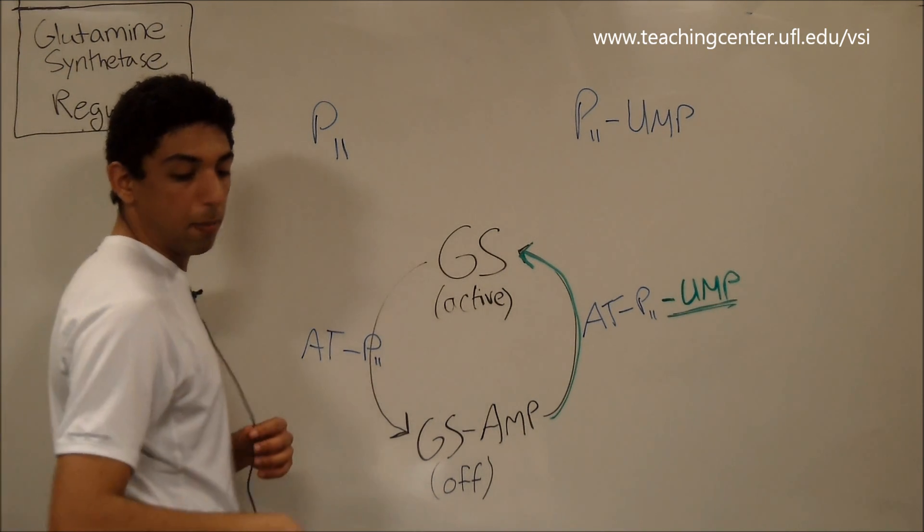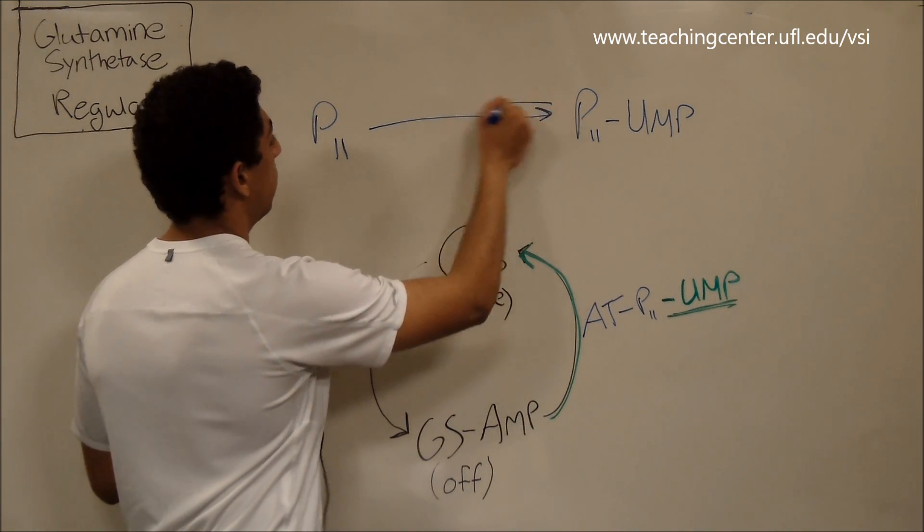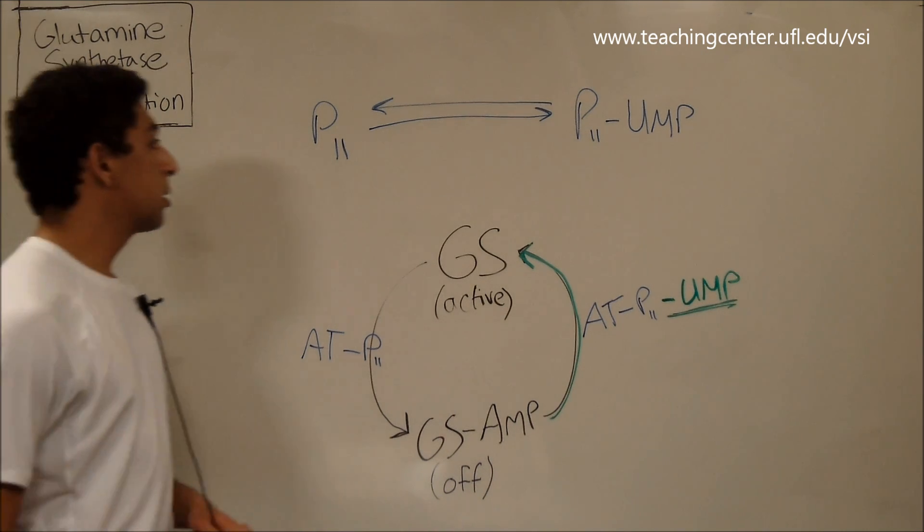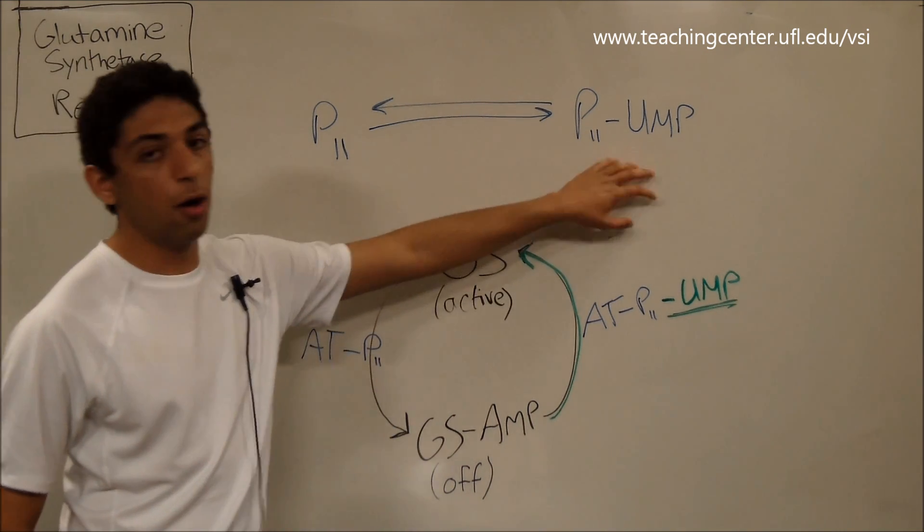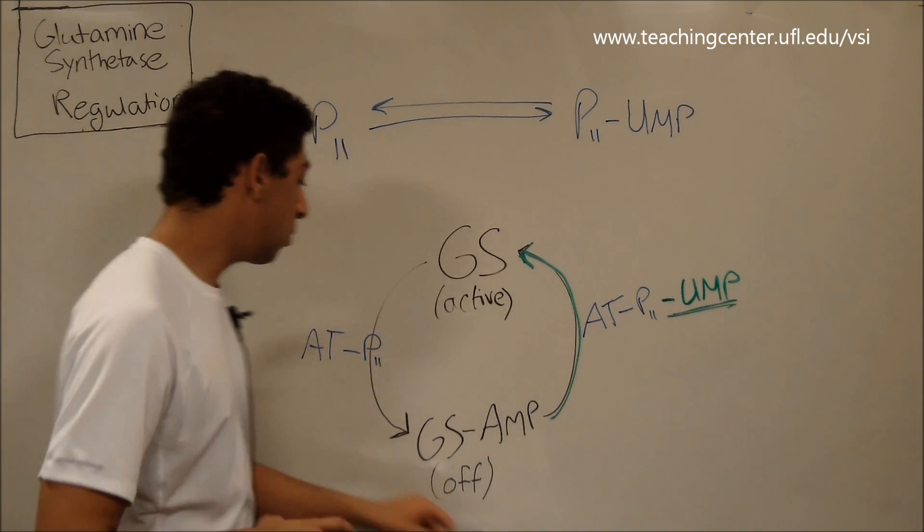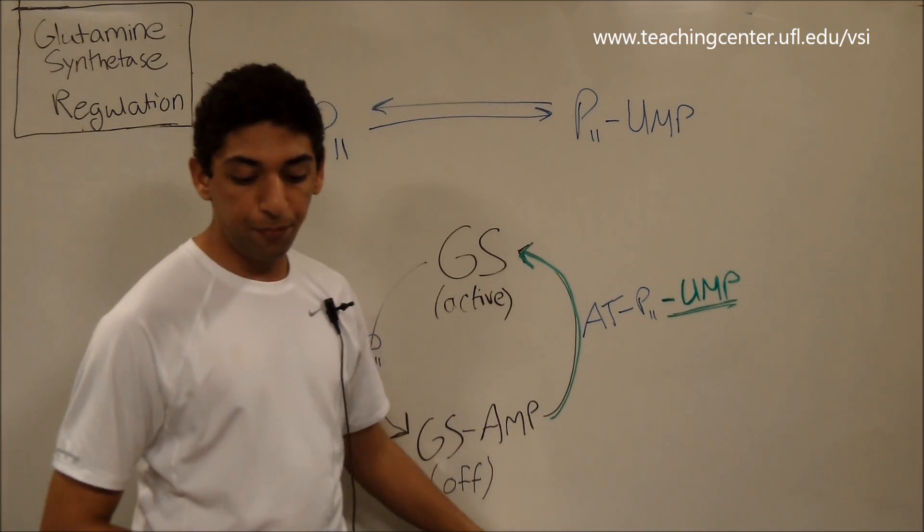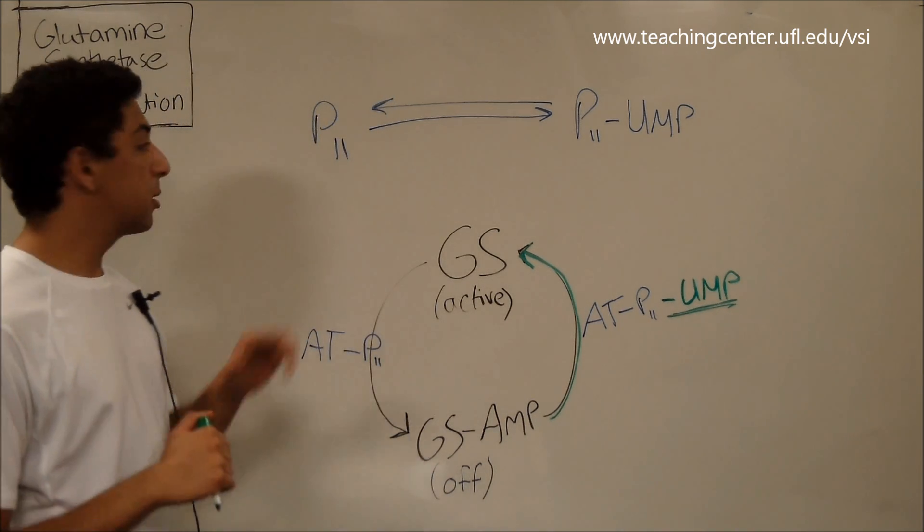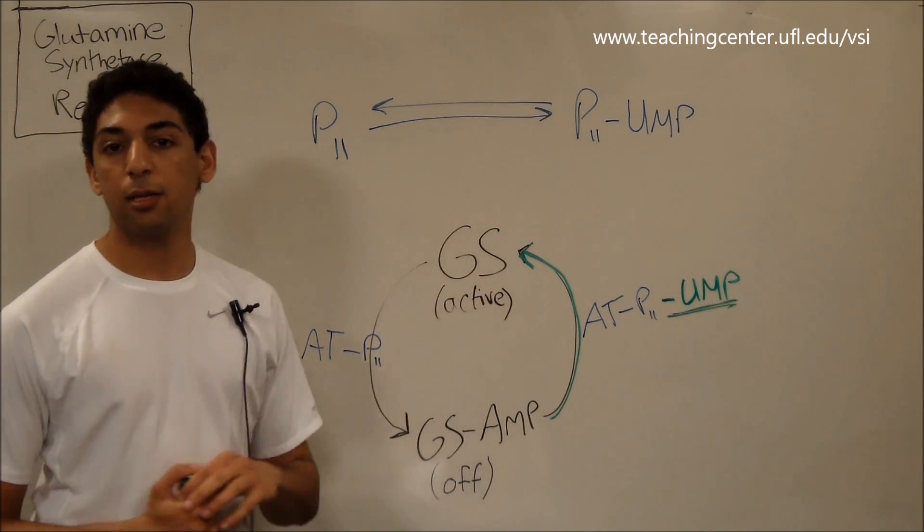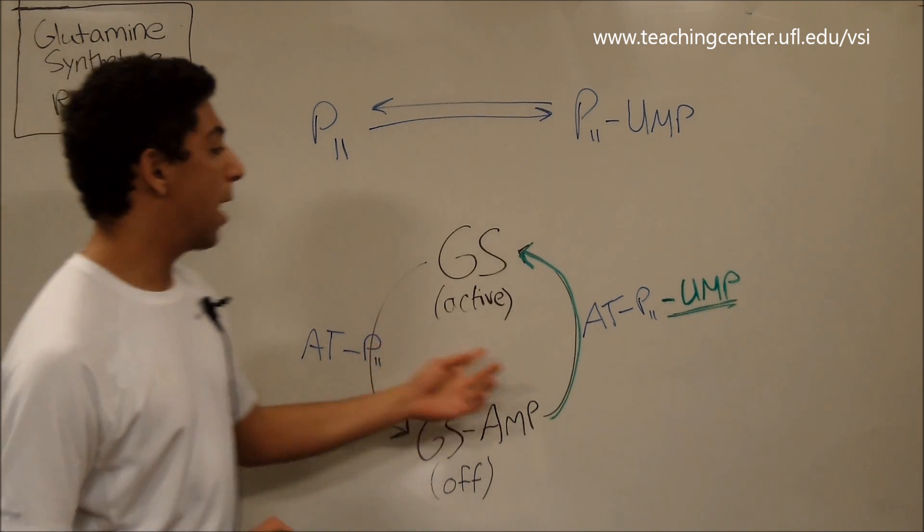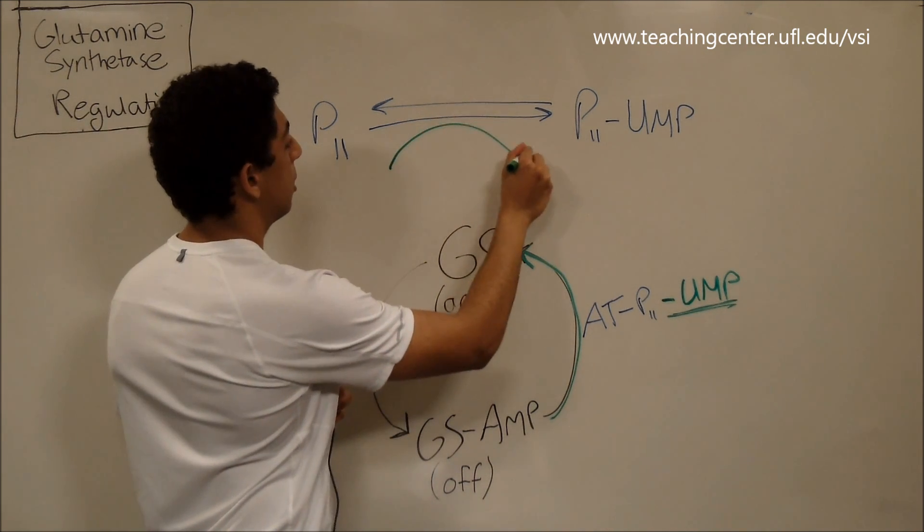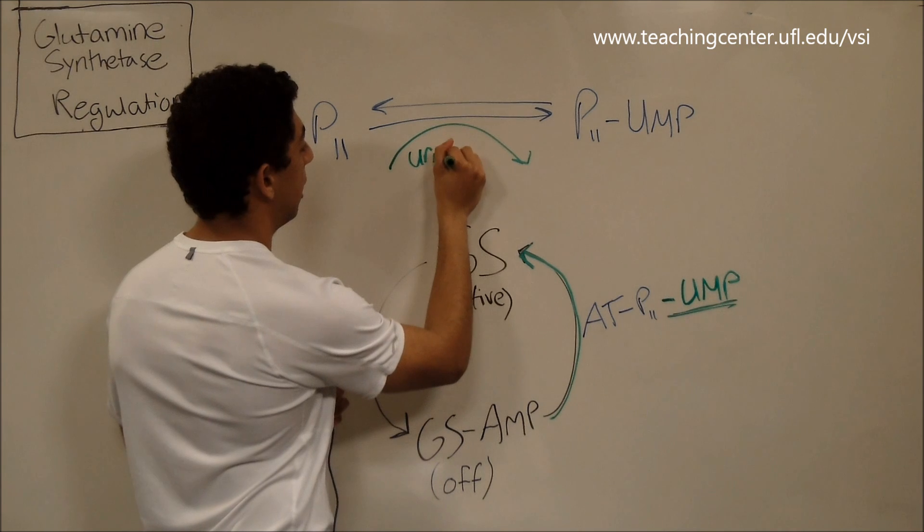So now we have to get back and forth between these two forms, right? So there's going to be some sort of equilibrium that exists here. Sometimes you're going to have more of this if you want the pathway to be on, and sometimes you're going to have more of this if you want the pathway to be off. So how do we switch between them? Well, going in the forward direction, let's say we want to turn this pathway on. We want to turn glutamine synthetase on.